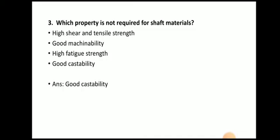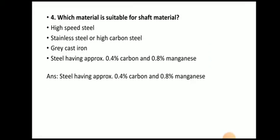Next question: which property is not required for shaft material? The answer is good castability, because the shaft is not manufactured with the casting process. It should have high shear and tensile strength, good machinability for lathe operations, and good fatigue strength because it is subjected to cyclic stresses. Good castability is not required.